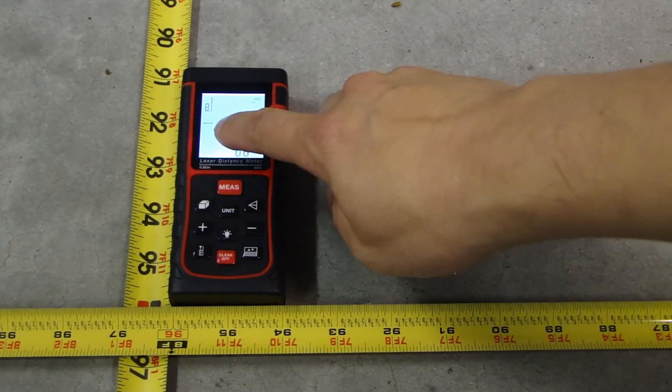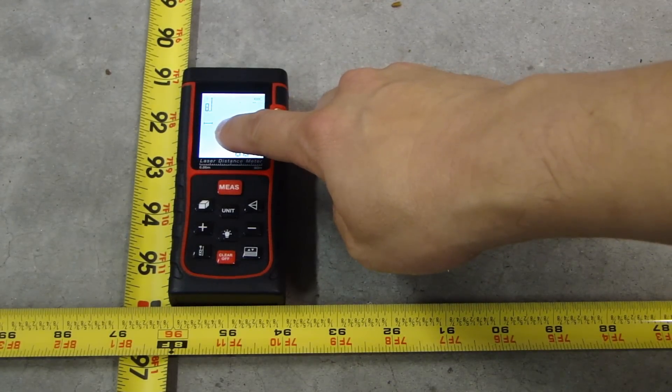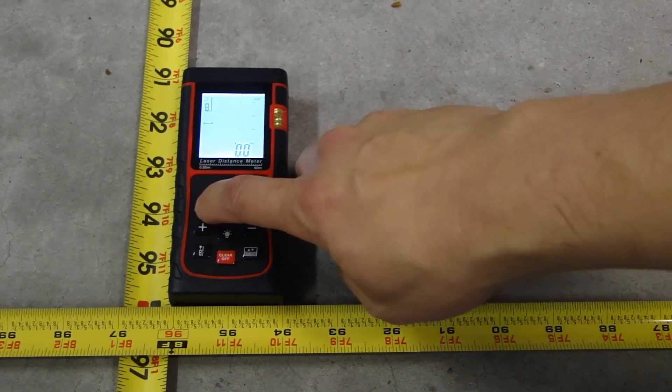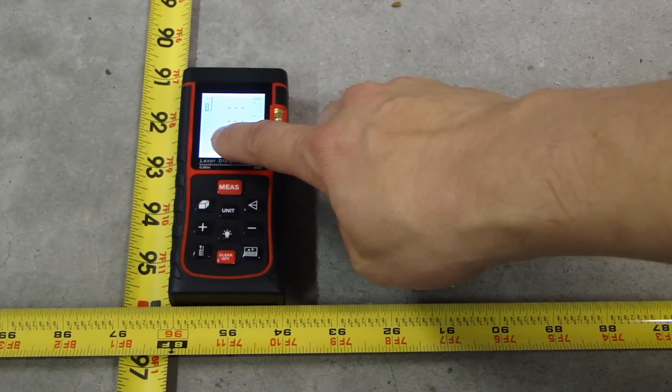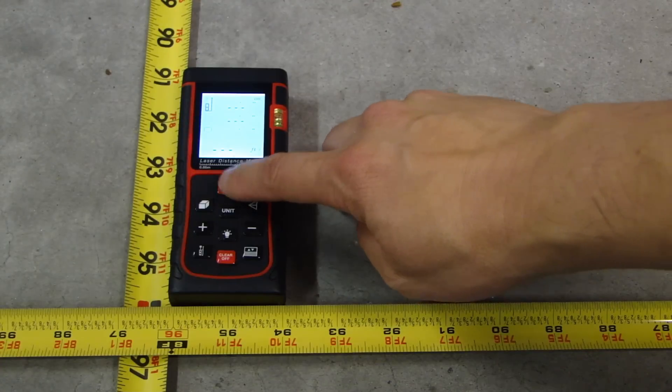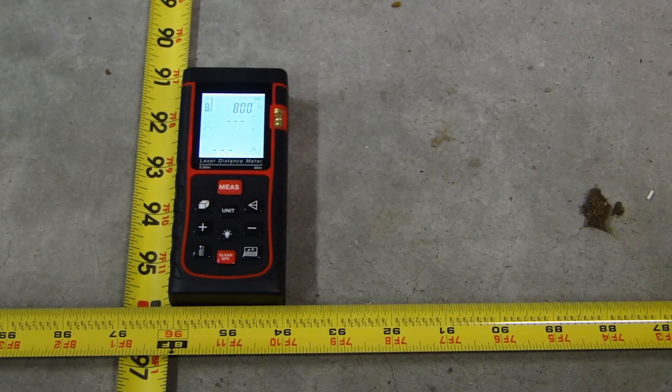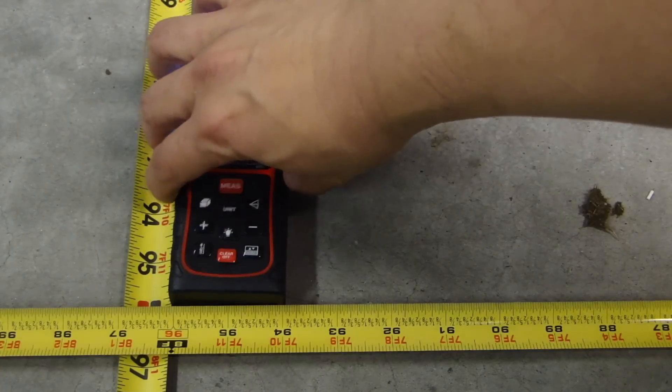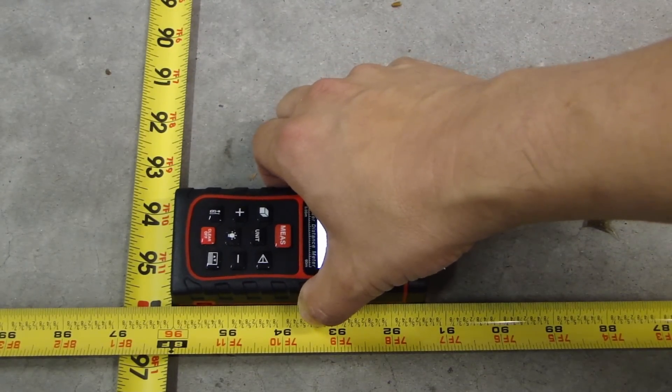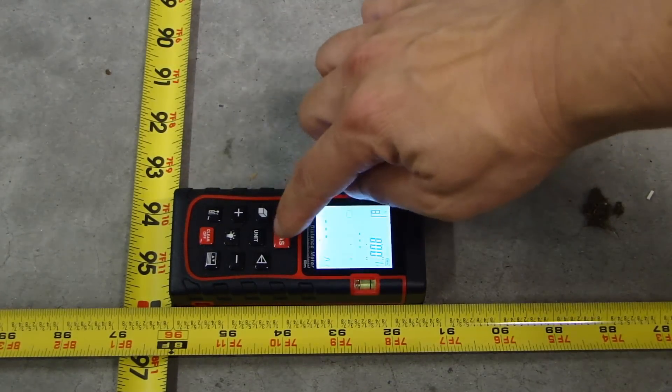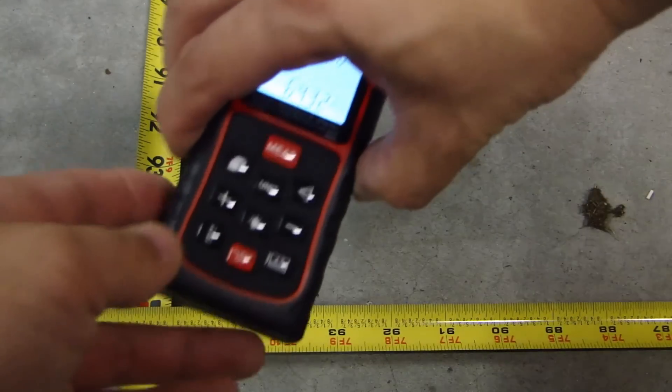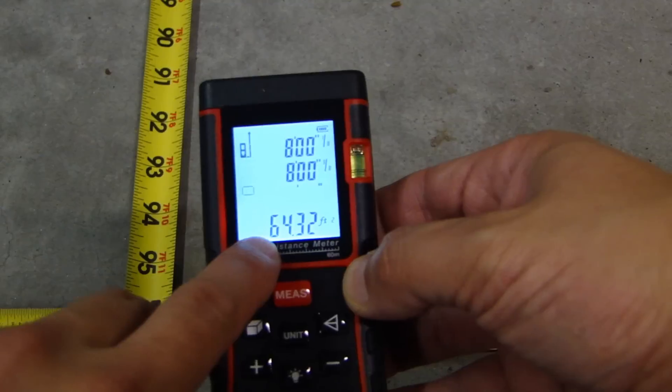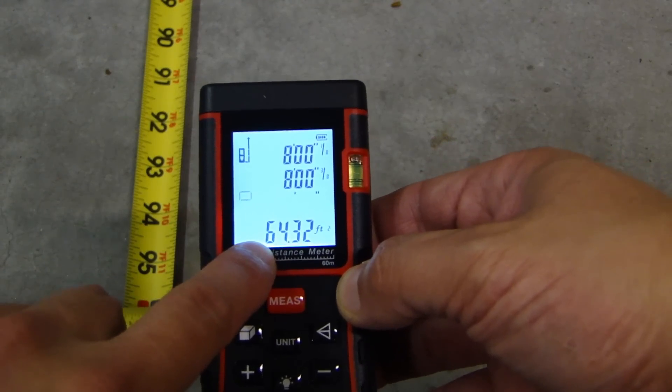To measure the area you first need to change the type of measurement is doing. So press this button here and I'll change it to measuring area. Now one of the side of this square icon is flashing, telling you to take the first measurement. So I'll press this button to measure. And measured eight feet. Now I'm going to turn this around to do the second measurement. Eight feet. So let me turn this around and you can see that the bottom here it calculated the total square feet, sixty four point three two.